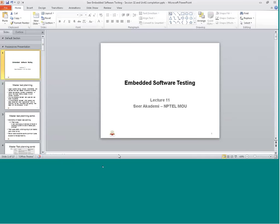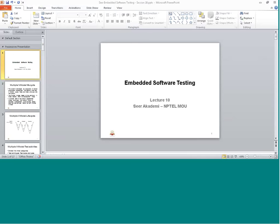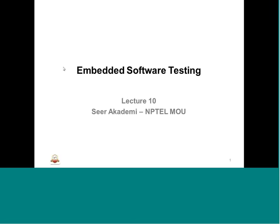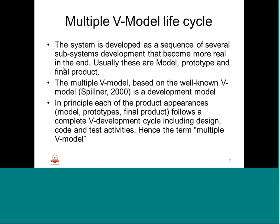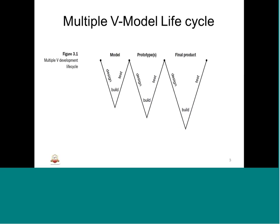In session 10, we understood different models. We started with life cycle models - prototype and formal life cycle. Then we studied the V-model having requirement, design, and implementation on the left-hand side, and unit testing, integration, and system testing on the right-hand side. We also went through the multiple V-model life cycle with model prototype and final product.